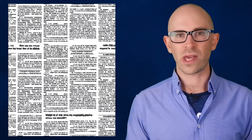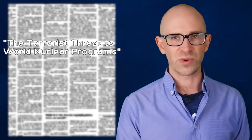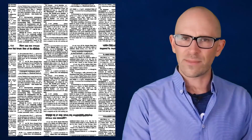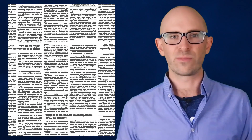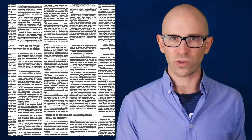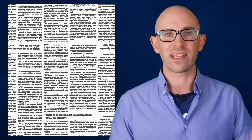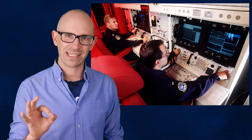Dr. Blair had previously made waves in 1977 when he wrote another article entitled 'The Terrorist Threat to World Nuclear Programs.' He had first attempted to communicate the serious security problems at the nuclear silos to congressmen starting around 1973. When that information fell on mostly deaf ears, he decided to outline it for the public in this 1977 article, where he described how just four people acting in tandem could easily activate a nuclear launch in the silos he had worked in.